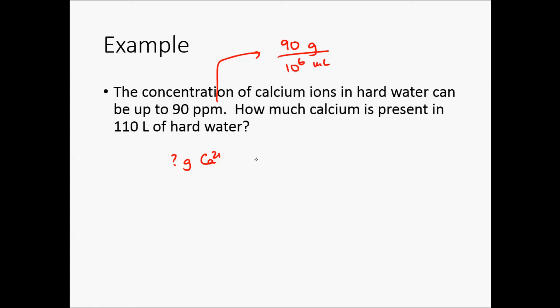So let's see, here we have 110 liters of hard water, and we convert this to milliliters, so 1,000 milliliters in 1 liter. And then we go from milliliters, so we then use this as a conversion factor. So in every 10 to the 6 milliliters, we have 90 grams. And therefore, if I go through the calculation, I will find that the mass of calcium here is 9.9 grams.